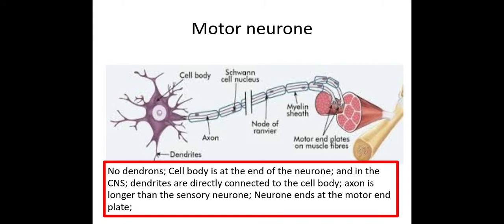The last neuron we need to be aware of is the motor neuron. This one doesn't have any dendrons present — it only has an axon present. The axon is the part of the neuron which takes the nerve impulse away from the cell body. In the motor neuron, the cell body is found within the central nervous system, and then the impulse is taken along the axon, away from the cell body, to the motor end plates which are connected to the effector — in this case, the muscle.